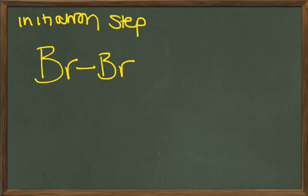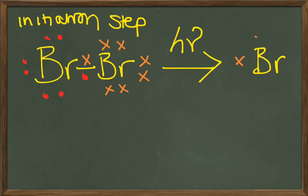is looking at the initiation step. This is where the free radicals are formed. And the covalent bond between the two bromine atoms breaks in a symmetric fashion to make two bromine radicals, each with seven electrons,